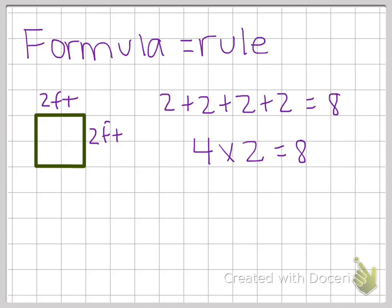So for a square, the rule or the formula is that P equals four times S. What that means is that the perimeter of a square equals four times S.